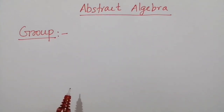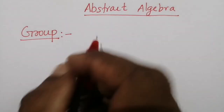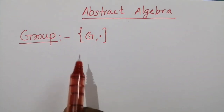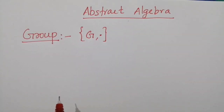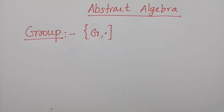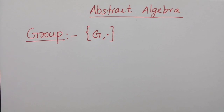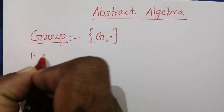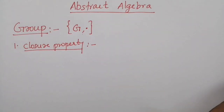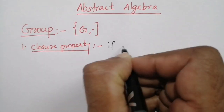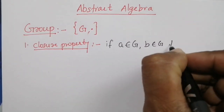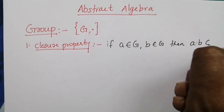First of all we will look at the concept of group. A group is denoted by (G, ·) and is a set of elements with a binary operation denoted by dot that associates each element present in the set to generate another element, such that the following axioms are obeyed. The first is the closure property, which says that if a belongs to G and b belongs to G, then a·b belongs to G.